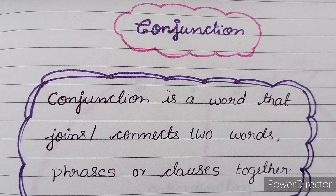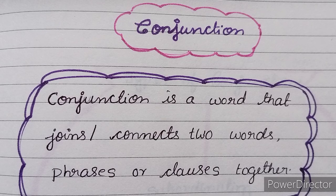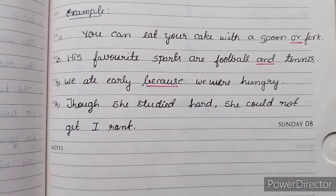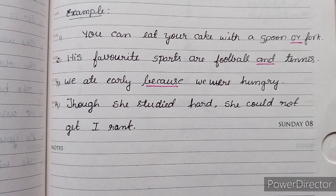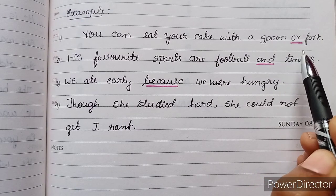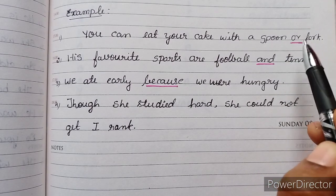A conjunction is a word that joins or connects two words, phrases, or clauses together. You can use a conjunction to link words, phrases, and clauses. For example: 'You can eat your cake with a spoon or fork.' Here, two words — spoon and fork — are joined together with the word 'or'.